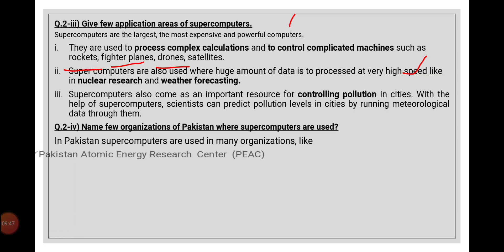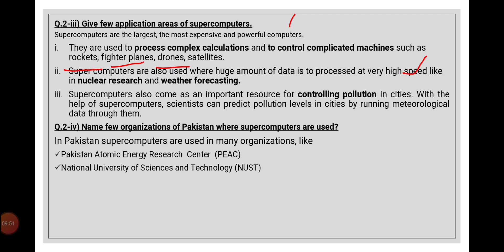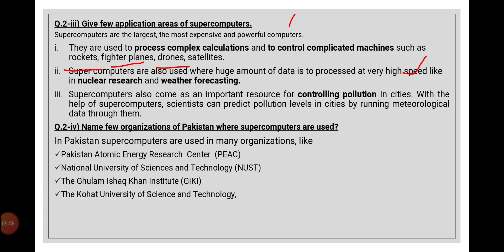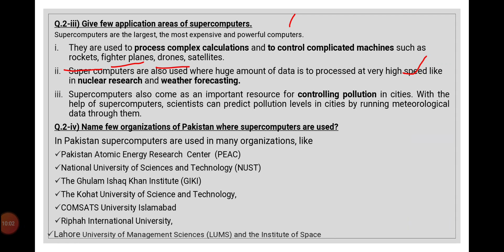The next question is that we have to list down the organizations which are using supercomputers in Pakistan. Some of the organizations currently taking benefit of supercomputing include the Atomic Energy Commission, NUST, LUMS — Lahore University of Management and Sciences — and also COMSATS, which is listed as an organization using supercomputers. You can also confirm this list by searching on the internet.